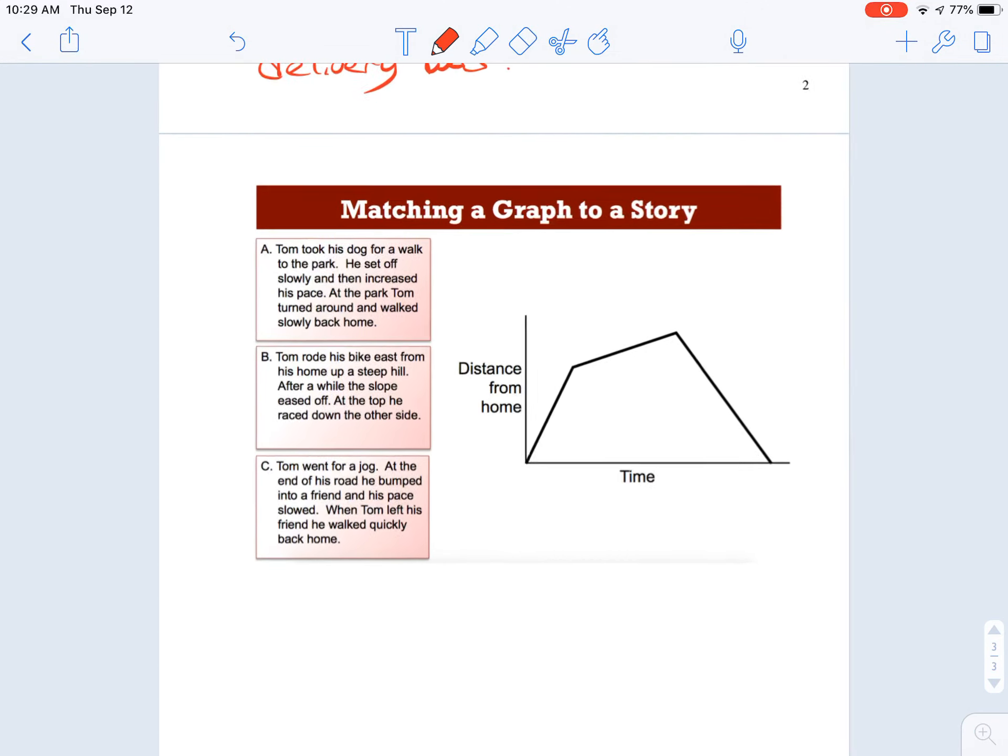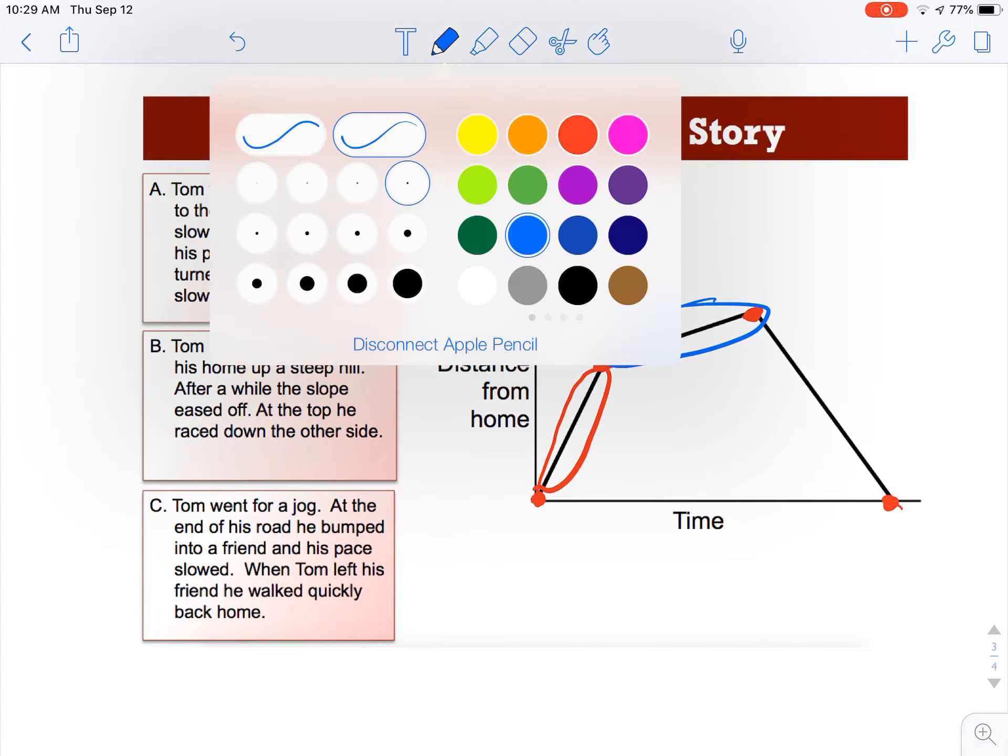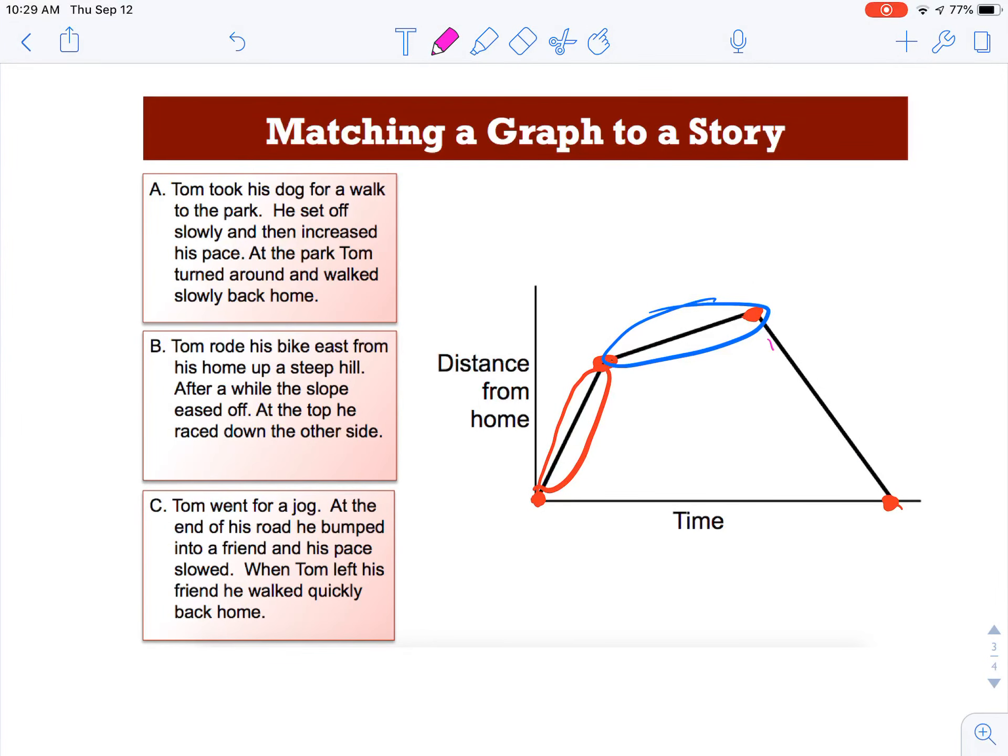All right, we've got one more question to do, and this is matching a graph to a story. First of all, I just kind of want to interpret what's going on. In this story, I like to label these little key changing points. It looks like whoever this is, is quickly, because it's a little steeper, they're quickly getting away from home. They're going somewhere. Now they slow down in this section, because it's less steep, it's flatter. So now they slow down, but they're still going away from home. They're still increasing. Their distance is still going up. And then, they are at a relatively fast speed going back home. So now let's read these stories.